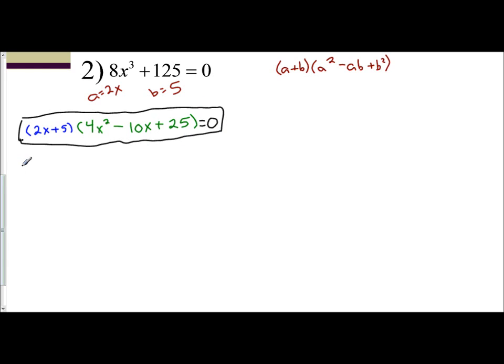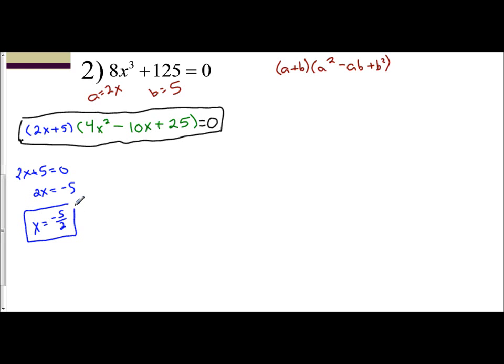Let's solve the real one first. 2x plus 5 equals 0, so 2x equals negative 5, and x equals negative 5 halves. There's your first solution.